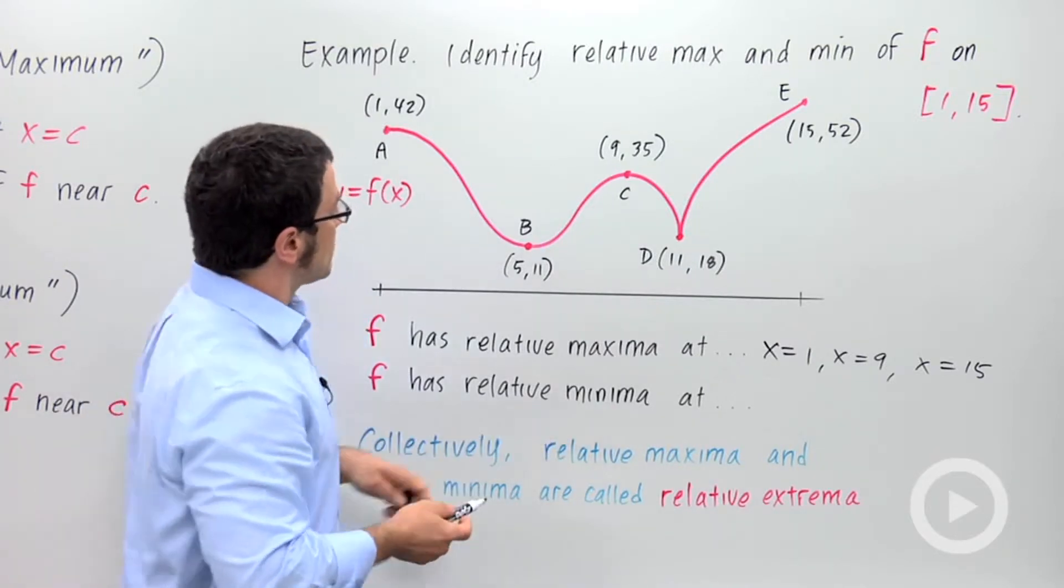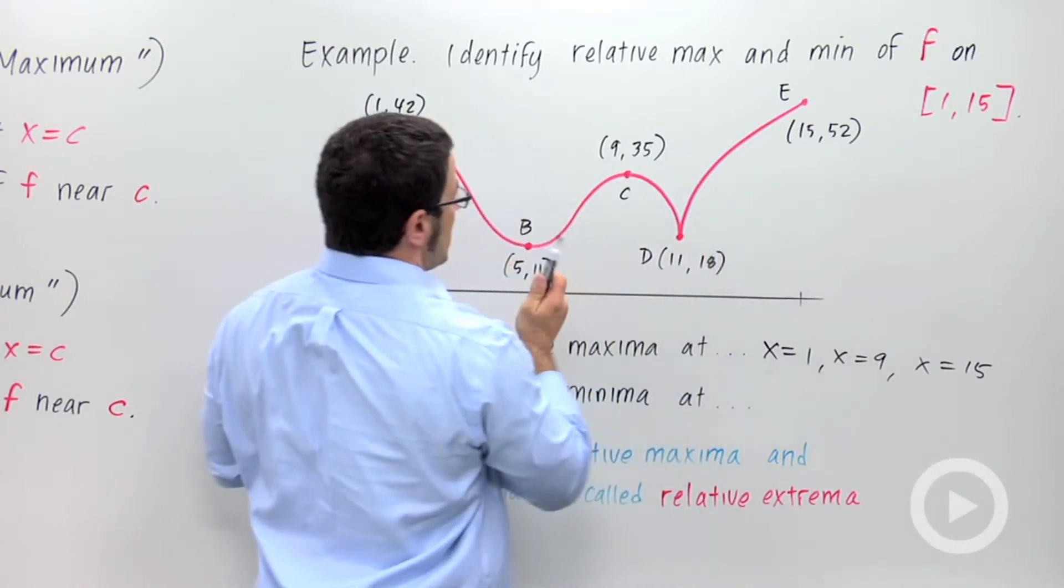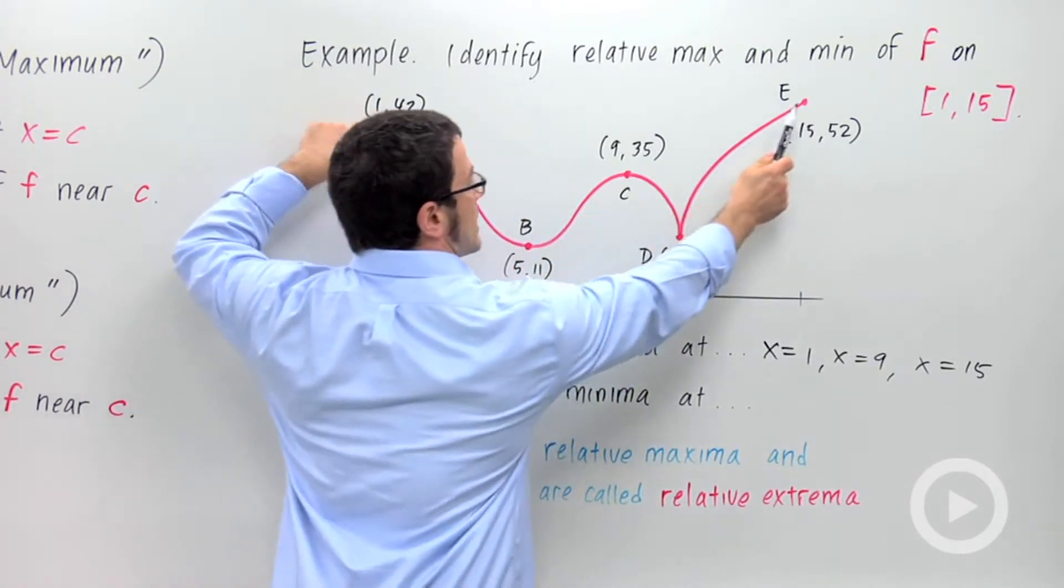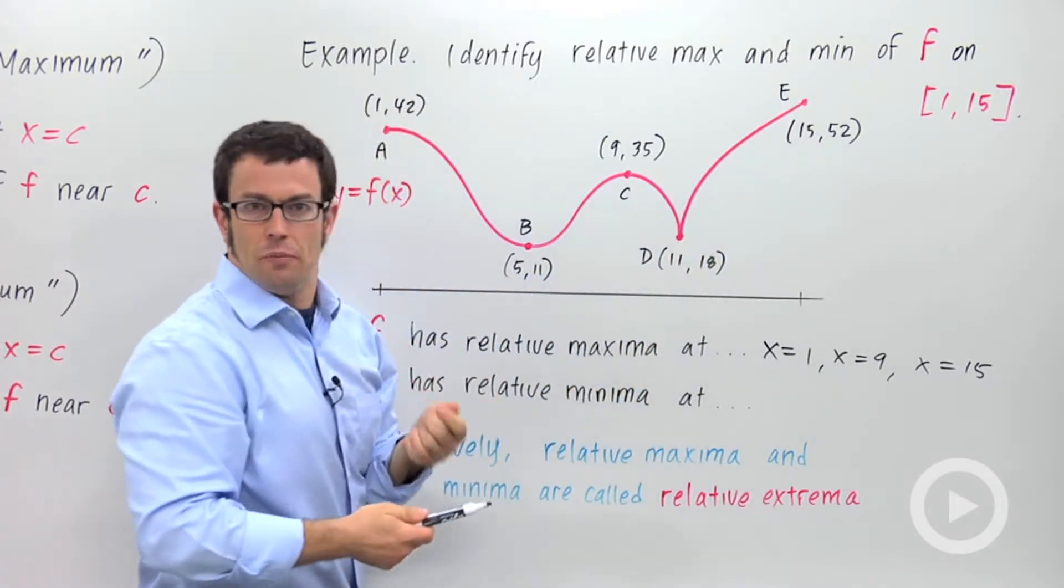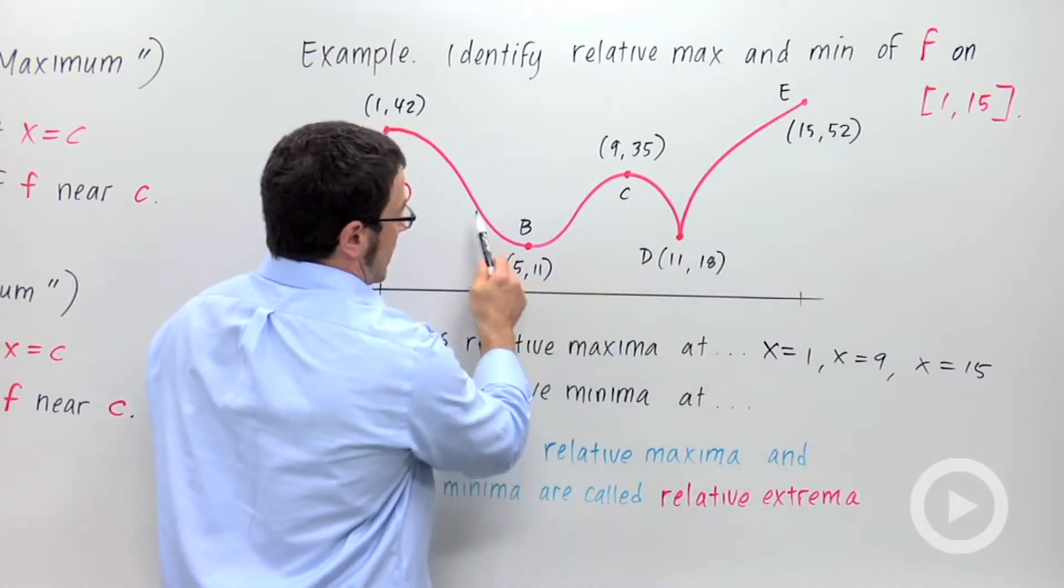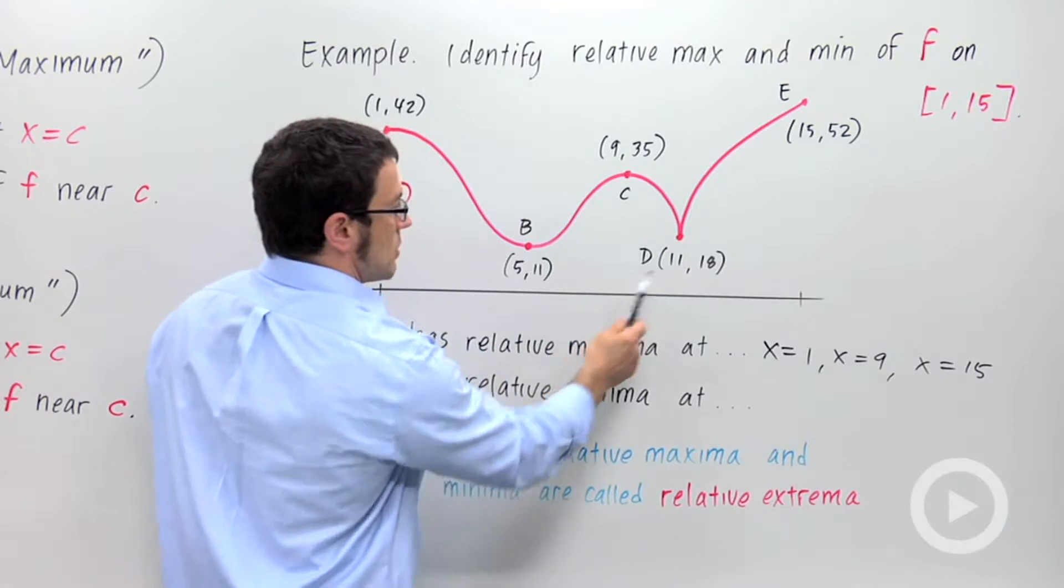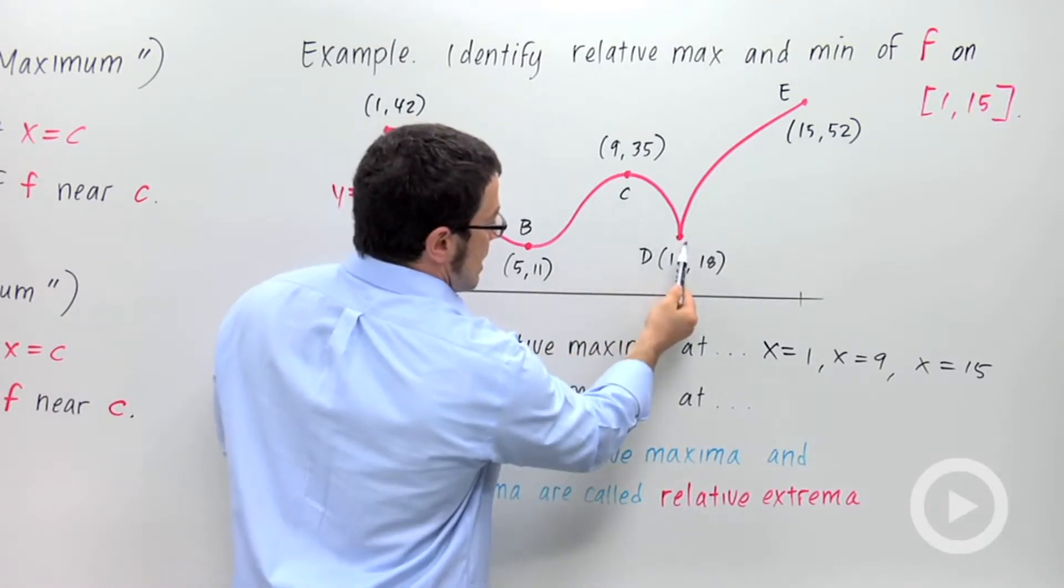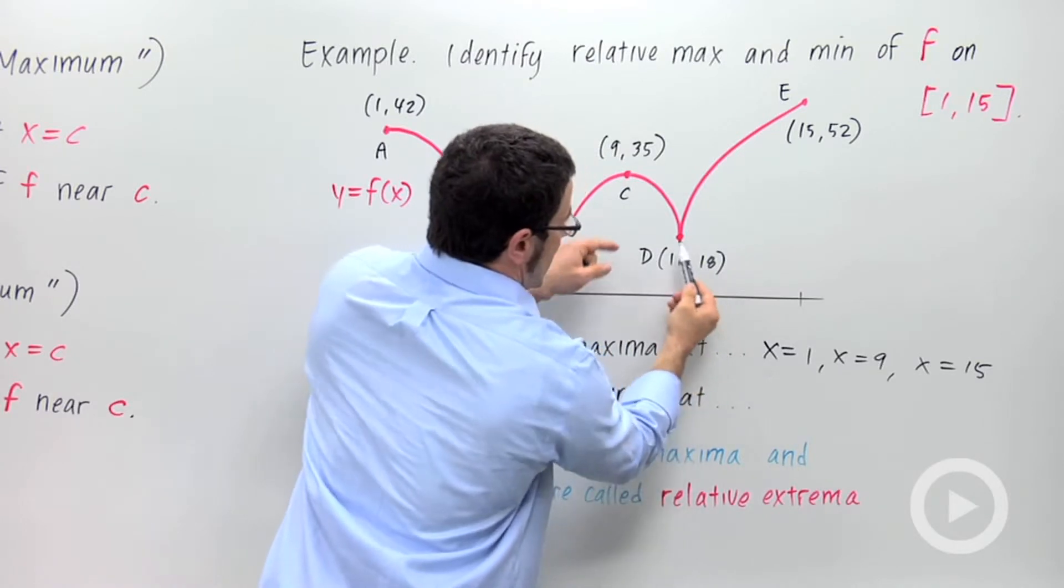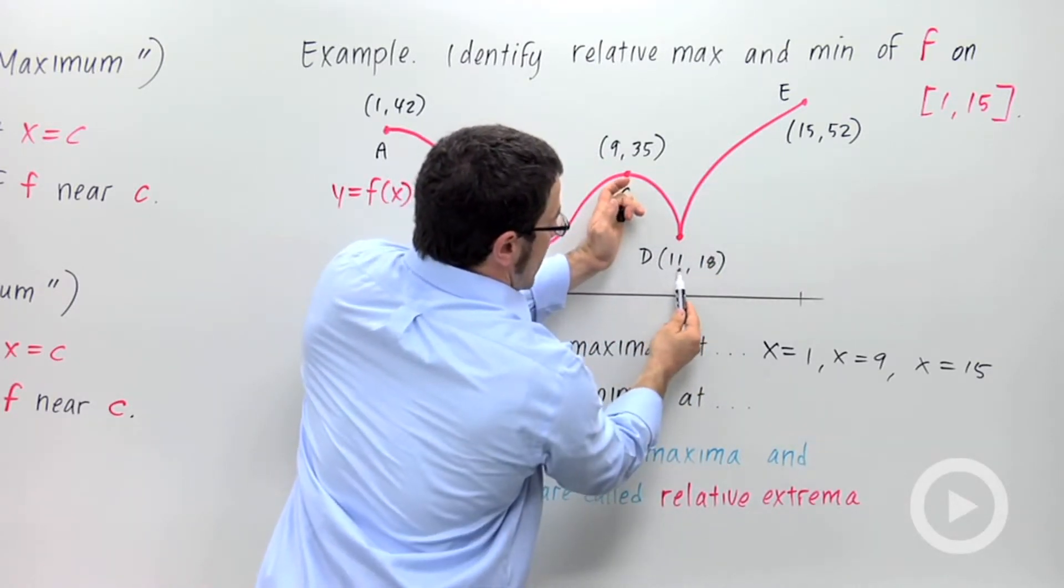Now, what about the relative minima? Well, it looks like these two. And I want you to pay close attention to the fact that first of all, two relative maxima occurred at endpoints. Endpoints are important to check. But also, relative maxima and minima don't need to look curvy. You can actually have a pointy minimum or maximum. So this counts as a minimum. It is the lowest point in a neighborhood around it. That value 18 is going to be the lowest point. And the minimum actually occurs at x equals 11.